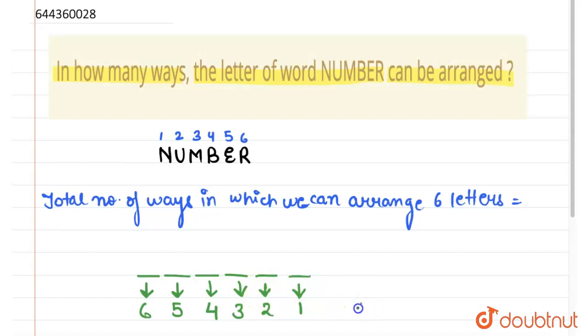So what is six into five into four into three into two into one? We do the product because they can be arranged among themselves also. So we can write it as six factorial (6!). Total number of ways in which we can arrange six letters is 6 factorial. What is 6 factorial? It's 720 ways.